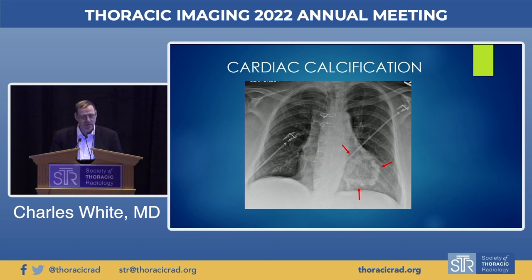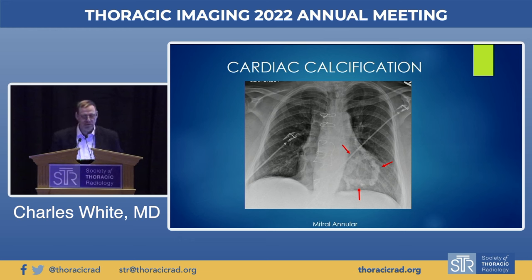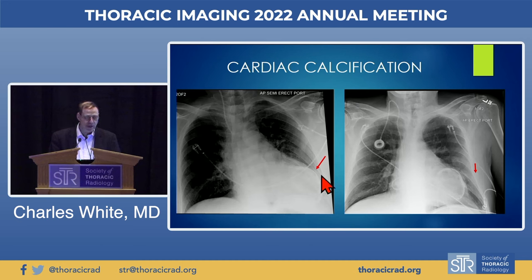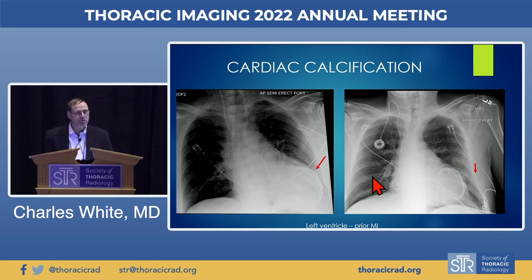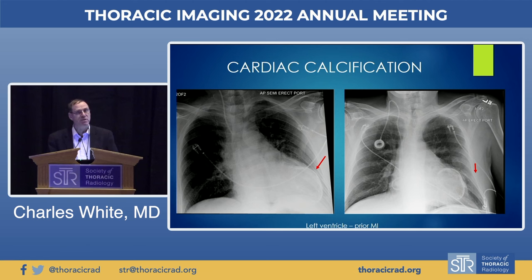Cardiac calcifications are a critical finding we see quite a lot. Particularly common in older women is mitral annular calcification — often circular or J-shaped, projecting over the left heart, and seen frequently on ICU films. Another calcification at the edge of the left ventricle — left ventricular calcification — is usually an indication of prior myocardial infarction, indicating the patient had a prior ischemic event. If it's bulgy, it often indicates the presence of a left ventricular aneurysm.